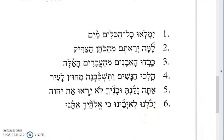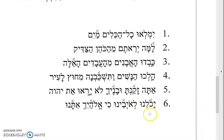Number six: yakolnu ve-oyaveinu ki Elohayik imanu. Yakolnu is Kal perfect first common plural from yakol, to be able. To be able with regard to means to prevail over, so: we prevailed over our enemies — oyaveinu is the plural with a suffix. The reason is ki — because — Elohayik, your god, imanu, was with us. Interestingly, the yu suffix here is feminine singular, so the person being addressed is a woman.